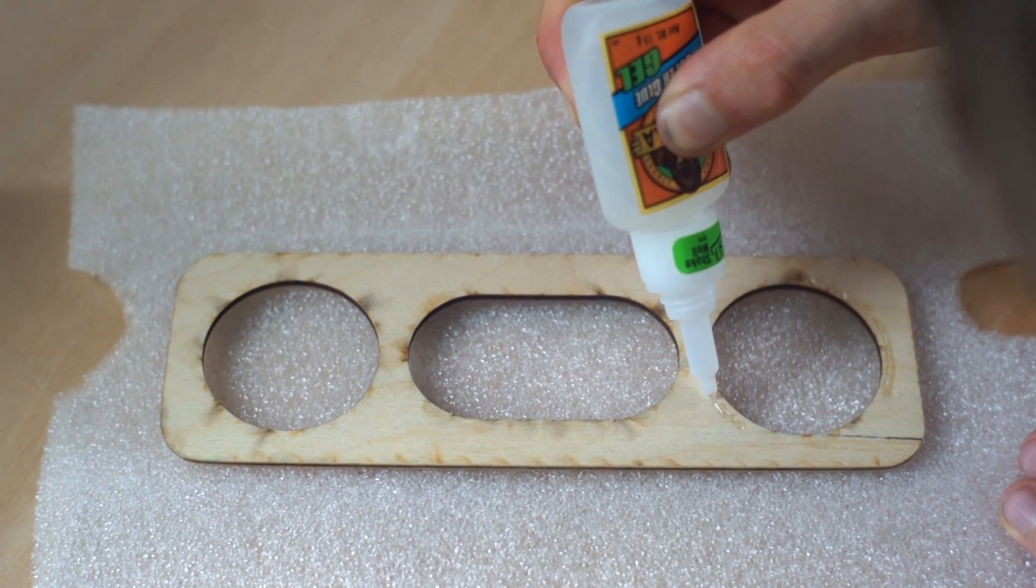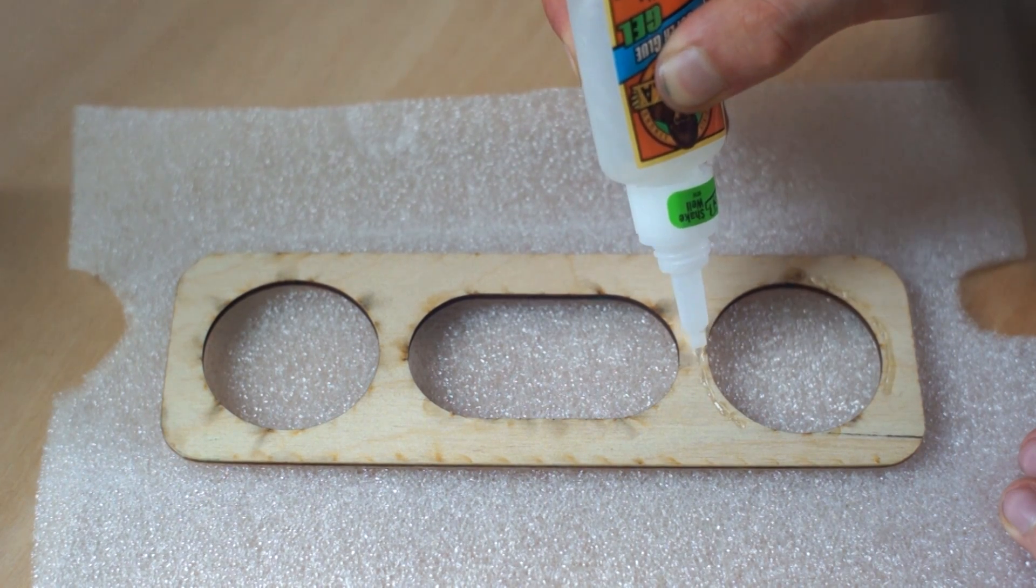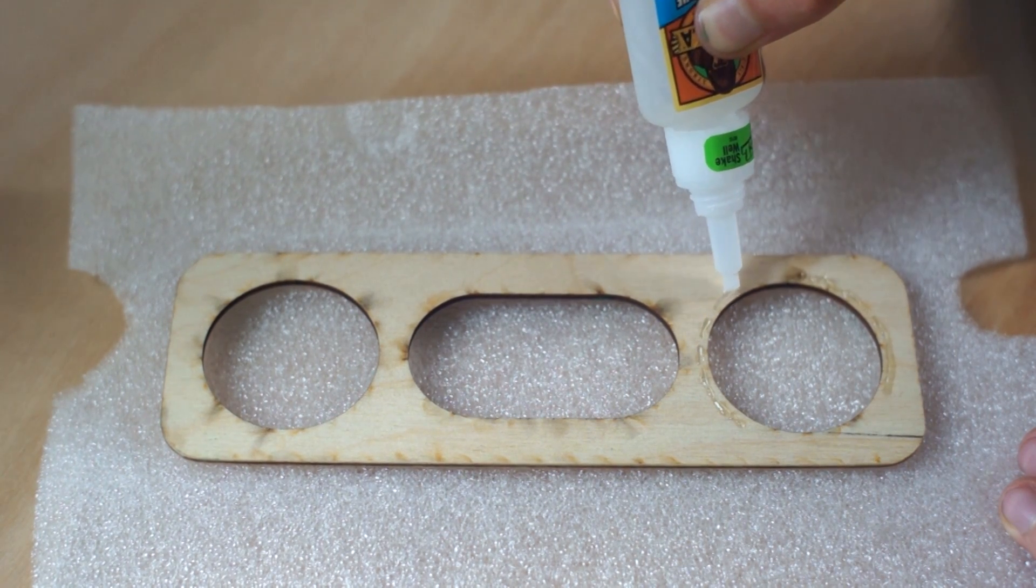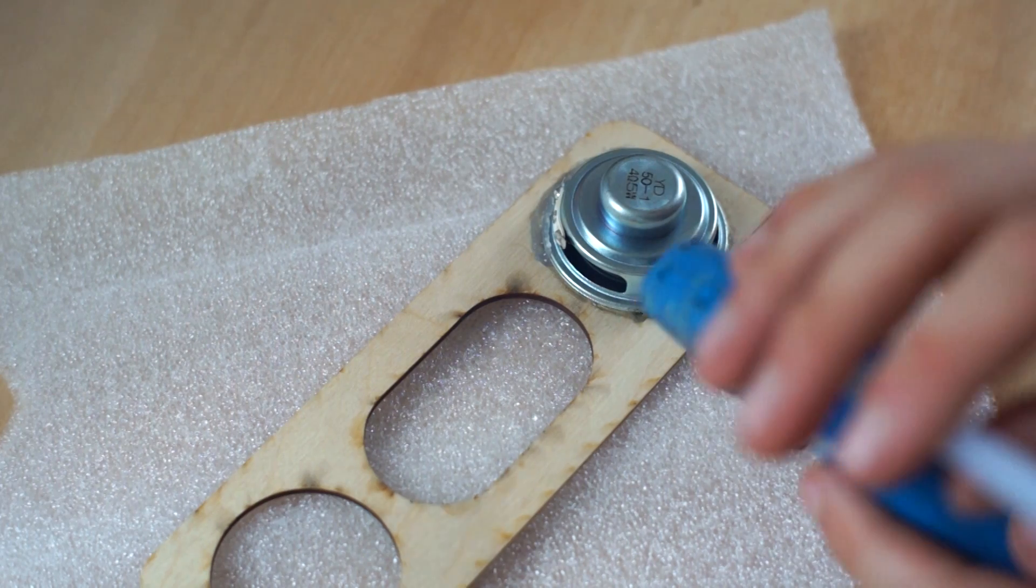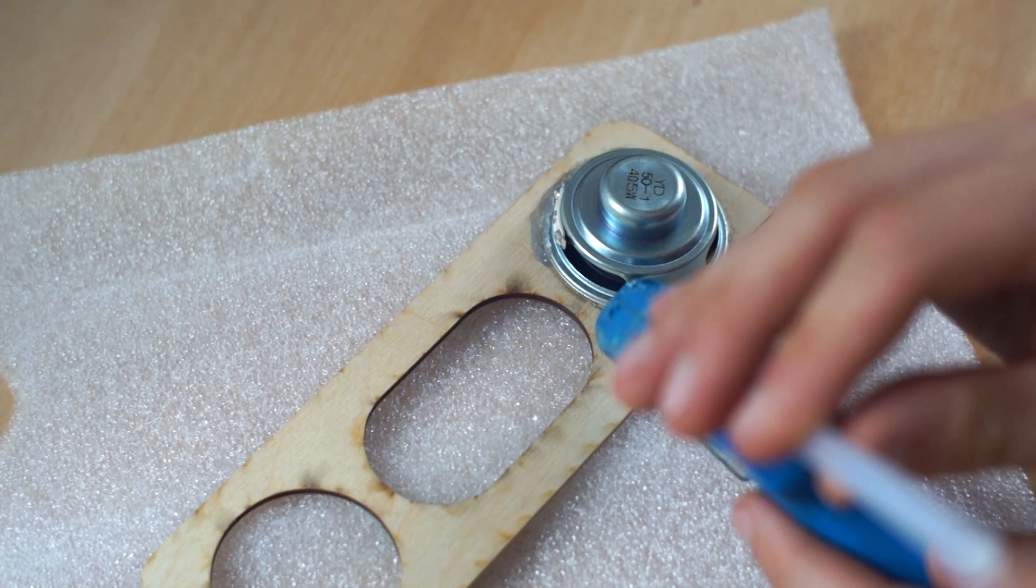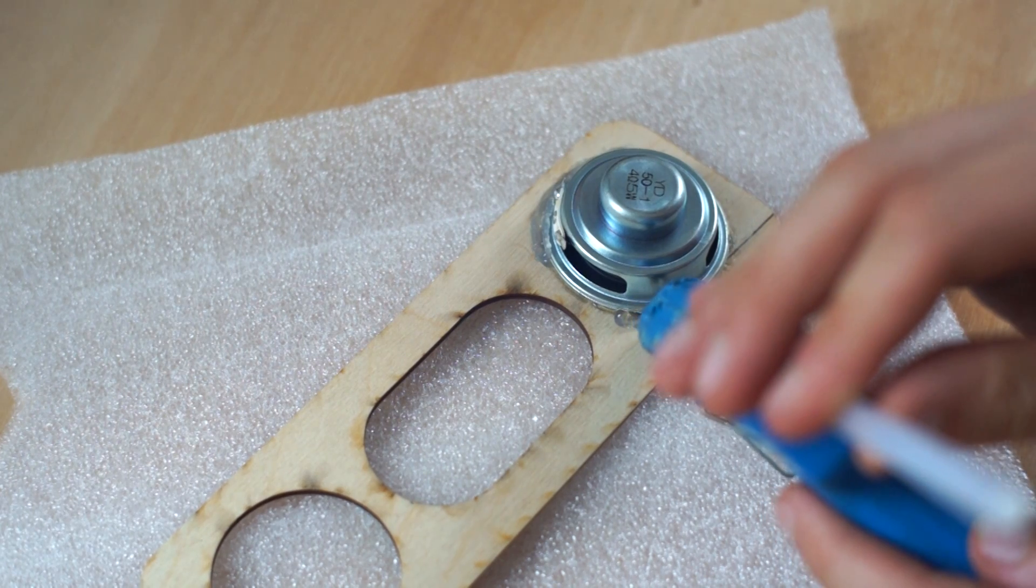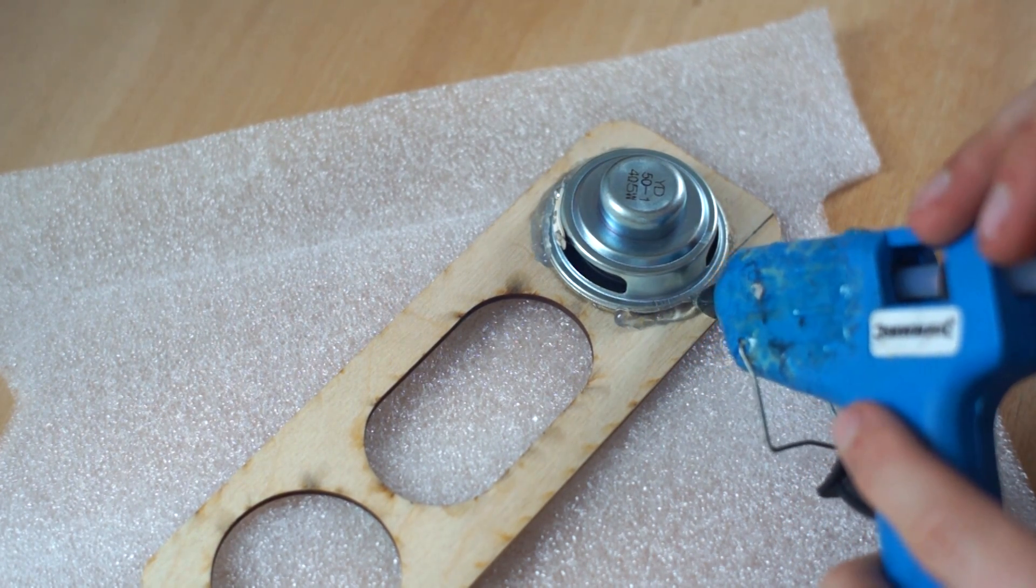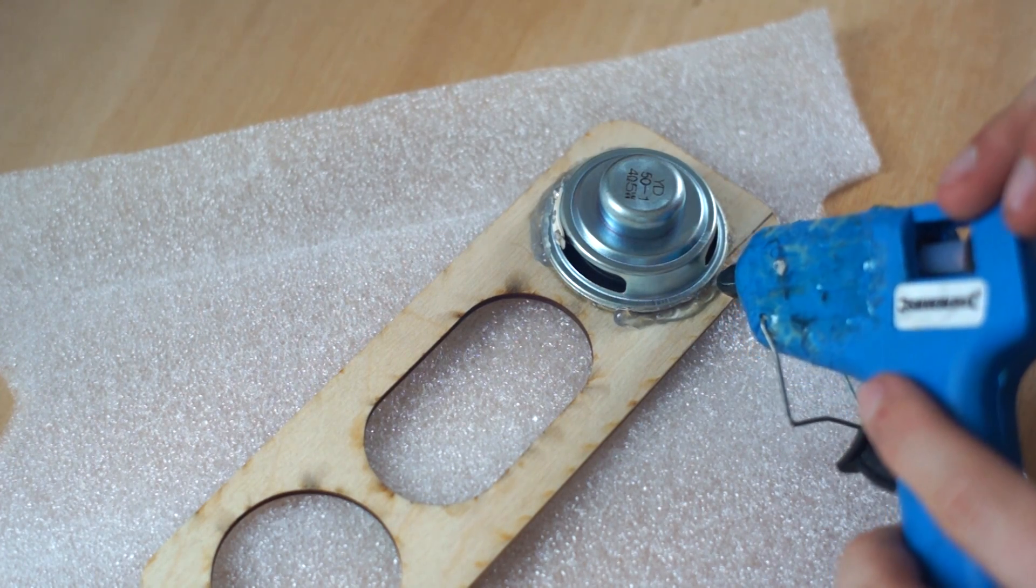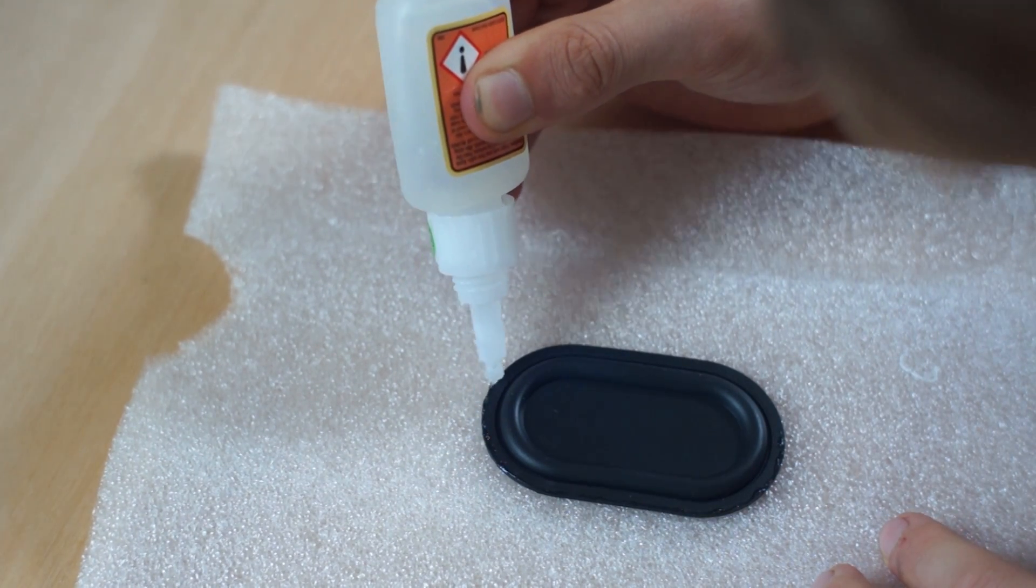So now we're going to move on to the front panel and on the underside we're going to apply a thin layer of super glue gel. This is going to ensure that the speaker sticks to the enclosure really well. It doesn't have to be perfect because we will also be adding hot glue afterwards to make sure that the enclosure is a hundred percent sealed.